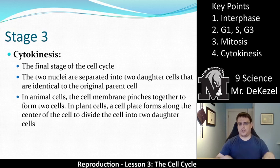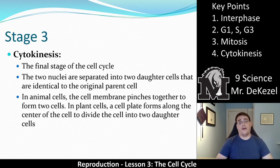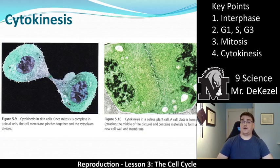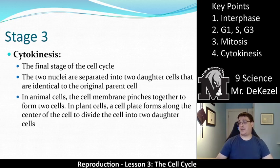Neither daughter cell is really older than the other — they're both completely new and get to start over in the cell cycle. In animal cells, the cell membranes pinch together just like a figure eight and then pull apart. In plant cells, a wall is being built in between because plants don't move — it needs to build a wall, and then the cells expand and grow. So there are two different ways cytokinesis occurs, but essentially the same result. In plants, the cell plate forms along the center to divide into two daughter cells.